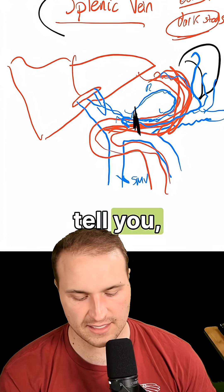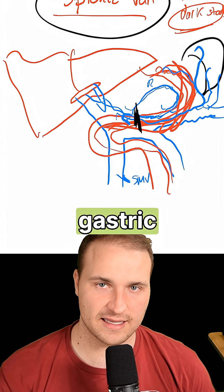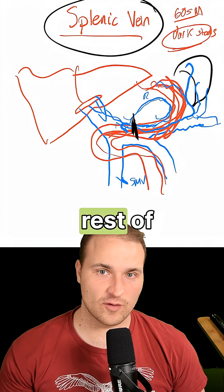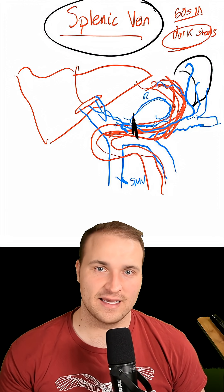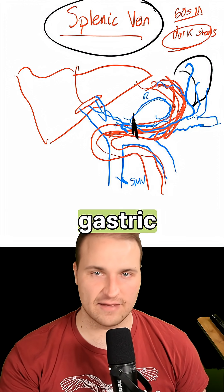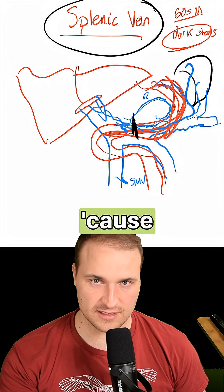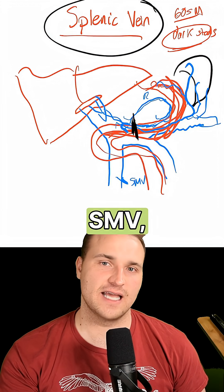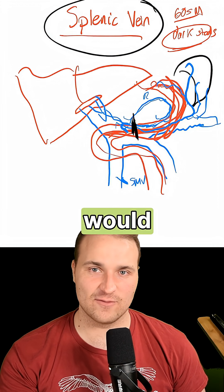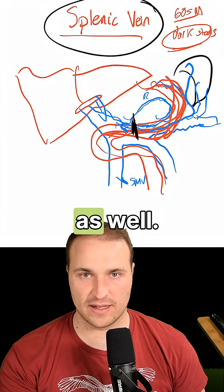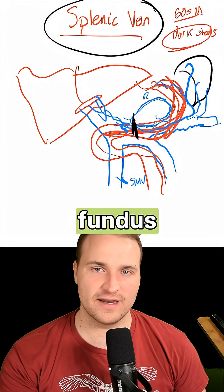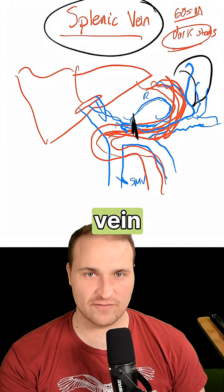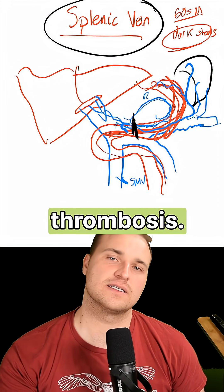In the question stem, if they tell you there's bleeding in the gastric fundus with a normal esophagus and normal rest of the stomach, that rules out the left gastric vein and portal hypertension — because that would affect both the esophagus and the stomach — and also the SMV, which would affect the lower stomach and small bowel as well. Fundus-only varices means short gastric vein backup and splenic vein thrombosis.